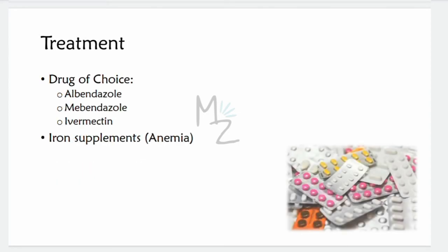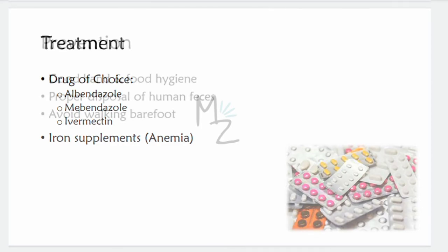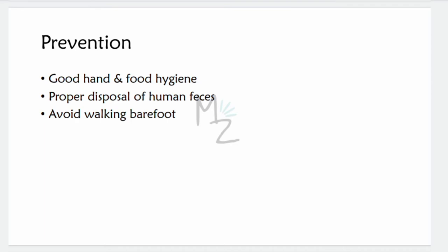The drugs of choice for Trichuris trichiura infection are albendazole, mebendazole, and ivermectin. Iron supplements can also be given to treat anemia due to blood loss. Prevention involves good hand and food hygiene, proper disposal of human faeces to prevent transmission, and people should avoid walking barefoot, as eggs deposited in soil can cause infection.